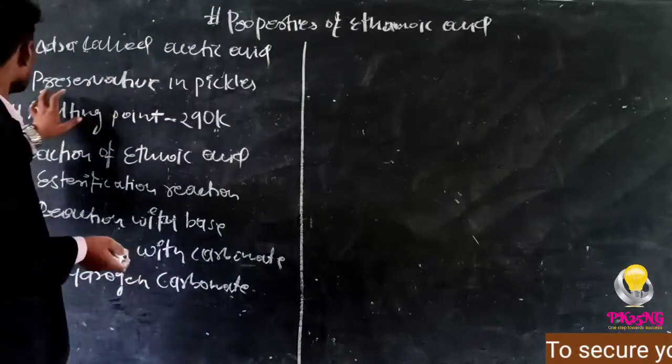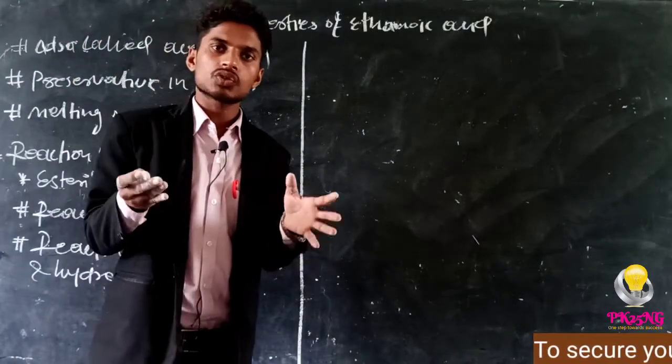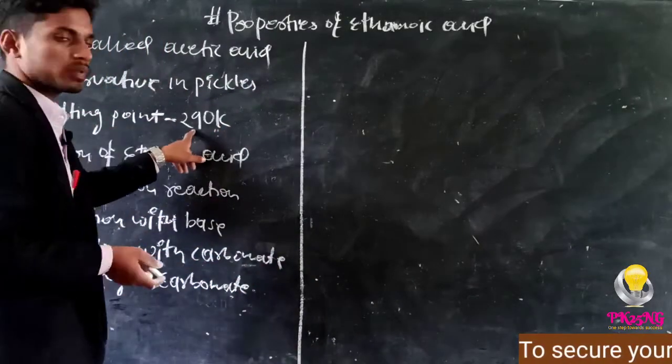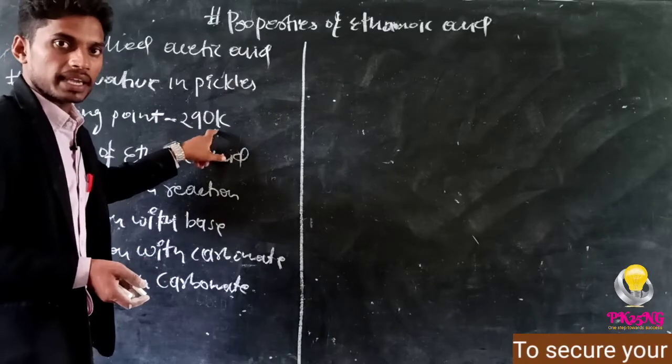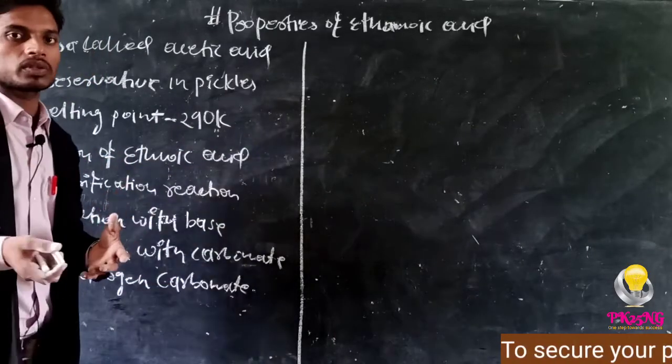In the properties, it's also known as acetic acid. Ethanoic acid is also known by the name acetic acid. It is used as a preservative to preserve things, to keep things safe, such as pickles and similar products. The melting point of ethanoic acid is 290 Kelvin.